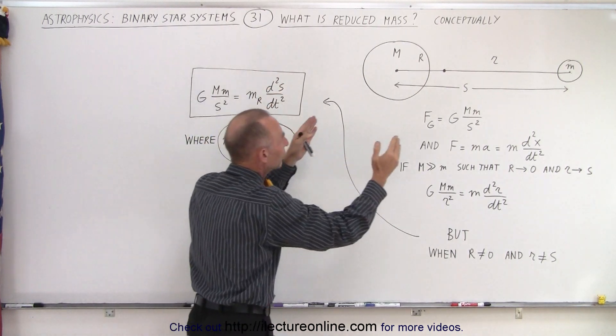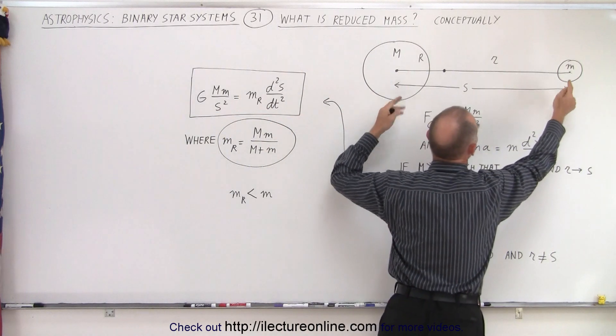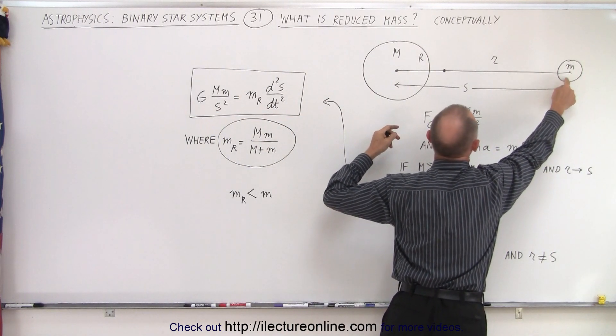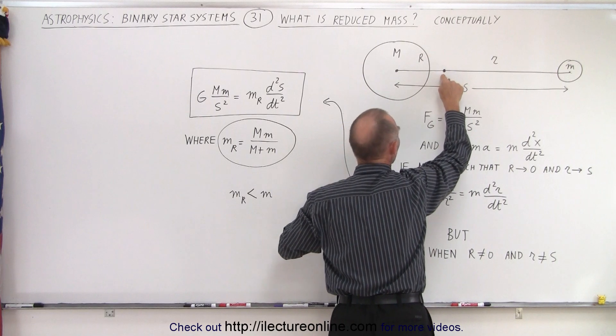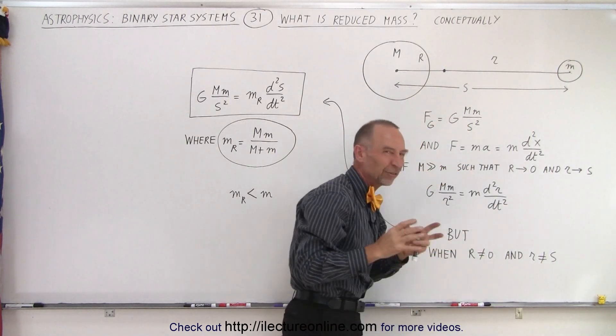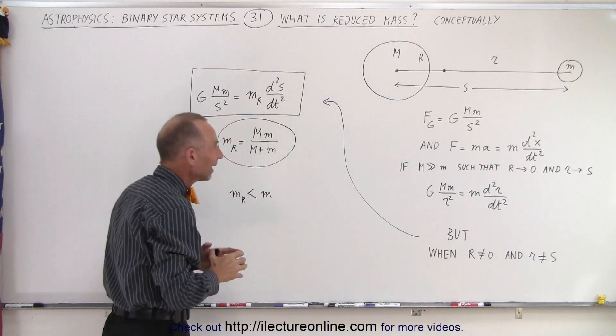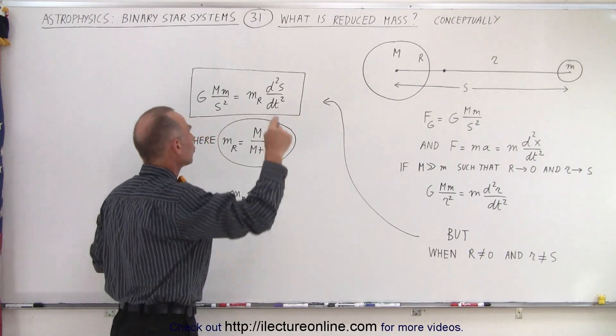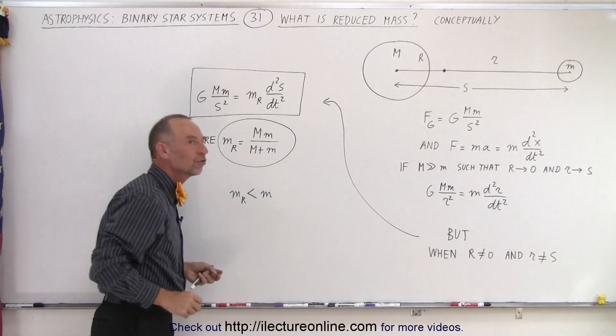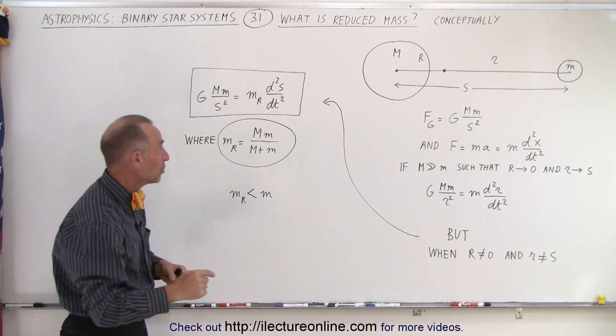Notice that we still use the full distance between them, but since small mass does not revolve around the center mass of the big object, but around the barycenter, the center of mass of the two objects, therefore we need to use the reduced mass to make this equation come out correctly.